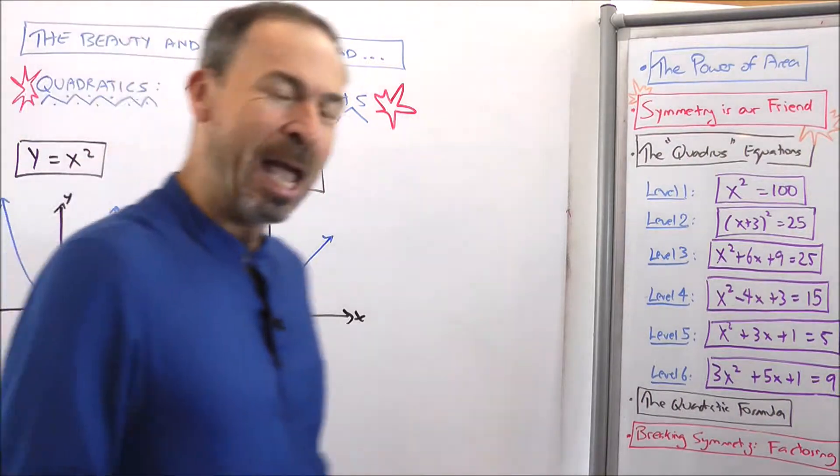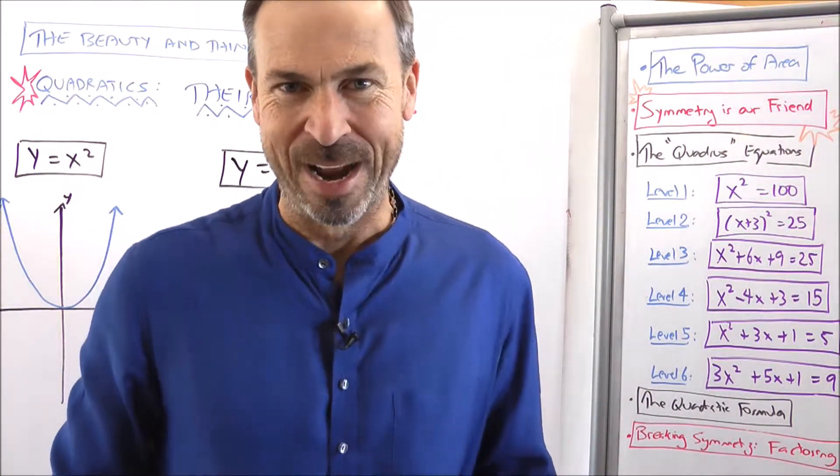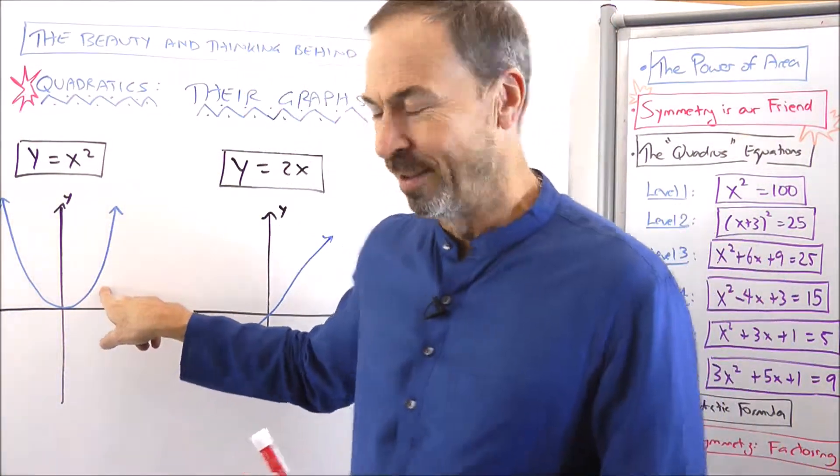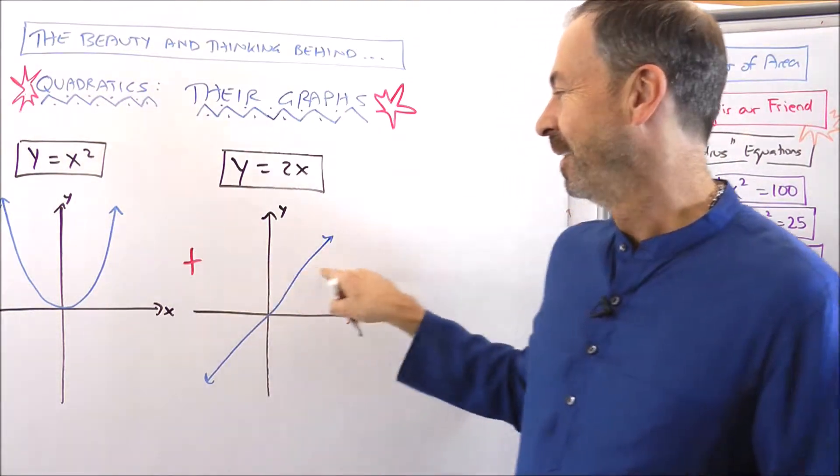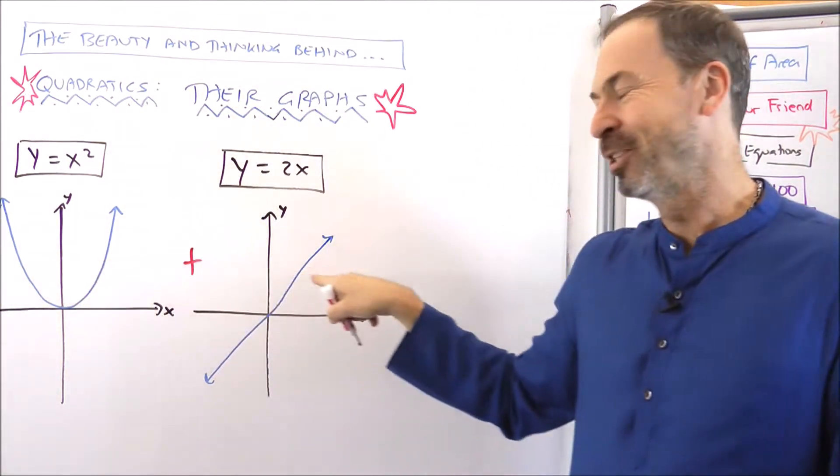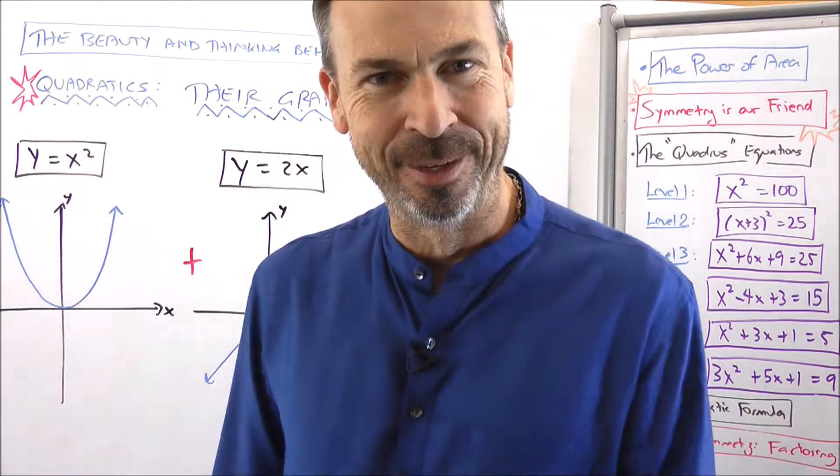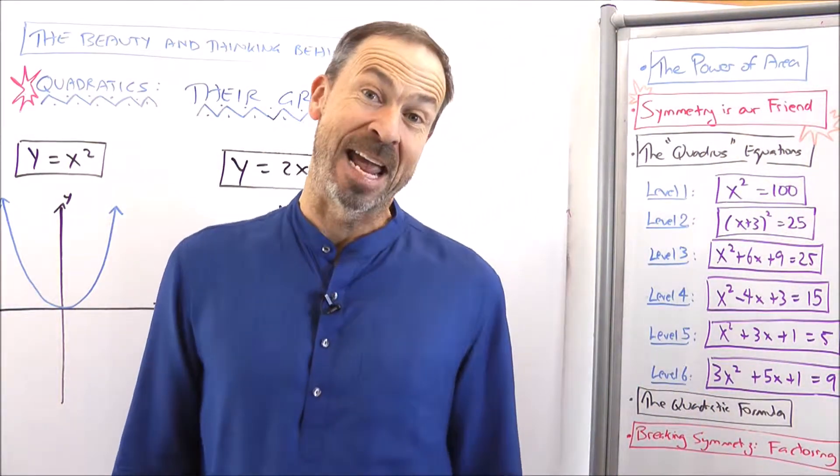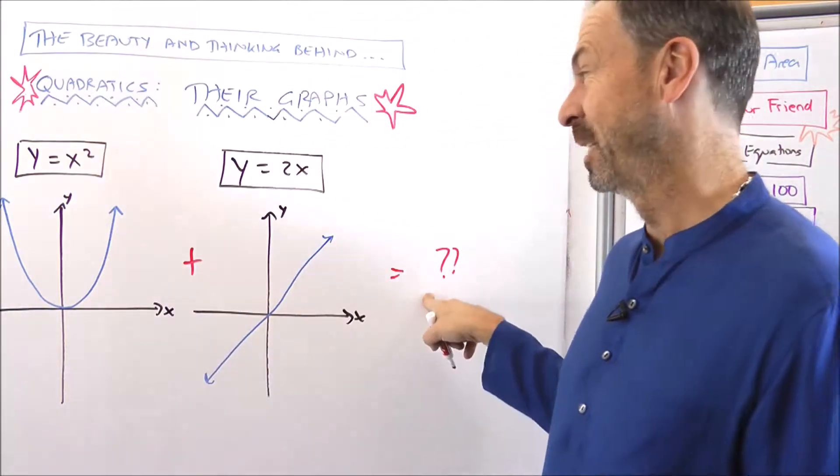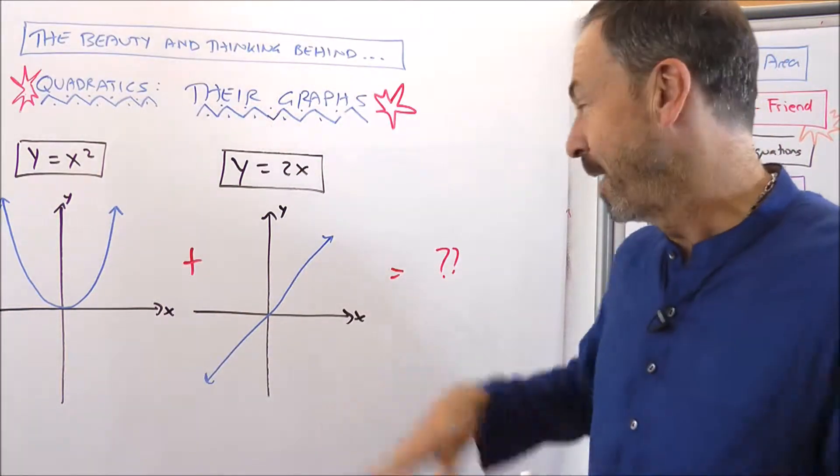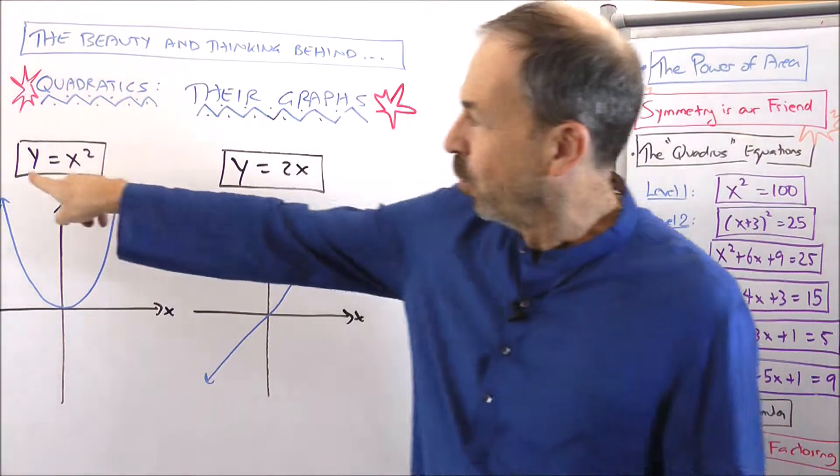But here's my puzzle. Imagine I did something very strange. What if I asked you to take this graph and add this graph to it? That is, add these two graphs together. What do you get? What shape graph comes out in the end? That's a very vague, bizarre question. I don't know if that really makes sense what I wrote on the board and read.